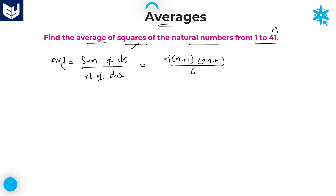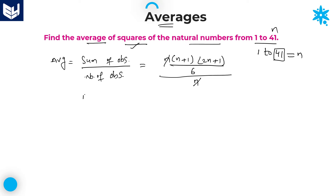Sum of squares of n natural numbers is n(n+1)(2n+1) divided by 6. In the denominator, the total number of observations is n. This n in the numerator and n in the denominator cancel each other. According to the question, we are calculating the average of squares of natural numbers from 1 to 41, so n is equal to 41. Substitute the value of n to get the exact answer.